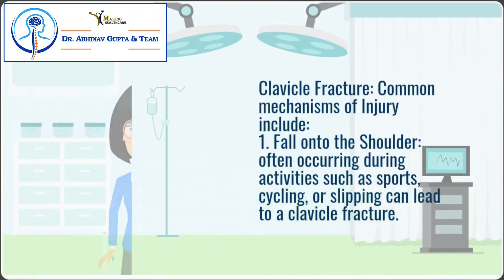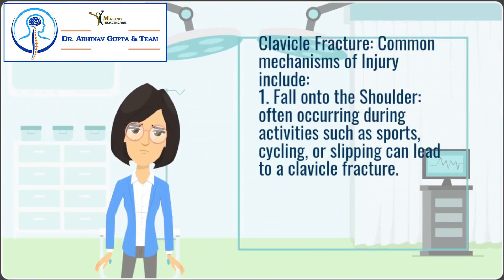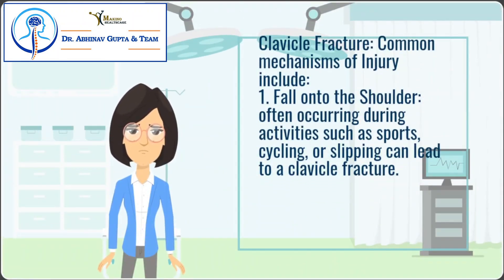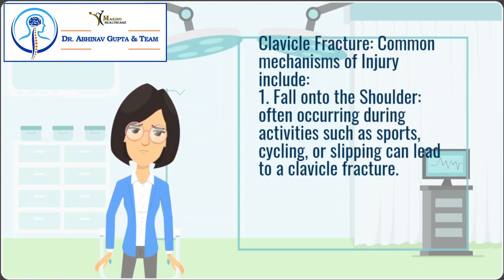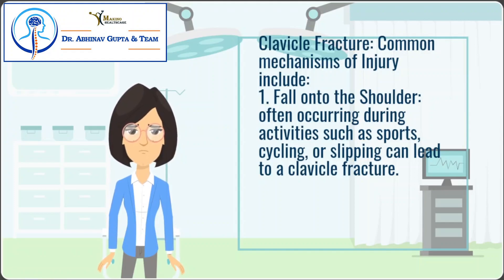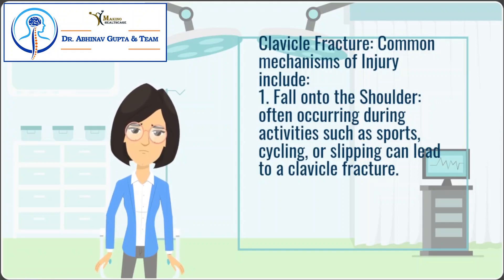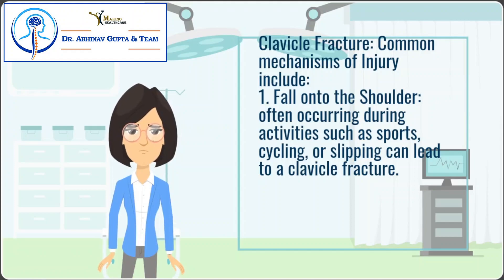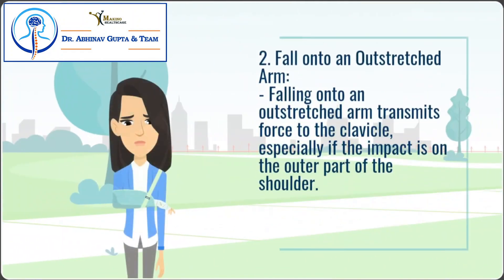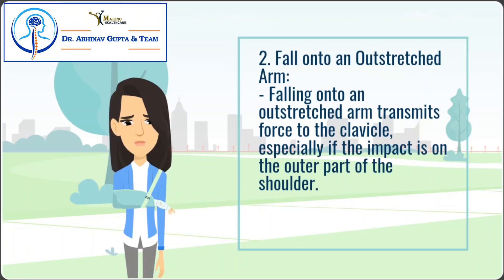Clavicle fracture. Common mechanisms of injury include: first, a fall onto the shoulder, often occurring during activities such as sports, cycling, or slipping, can lead to a clavicle fracture. Second, falling onto an outstretched arm transmits force to the clavicle, especially if the impact is on the outer part of the shoulder.